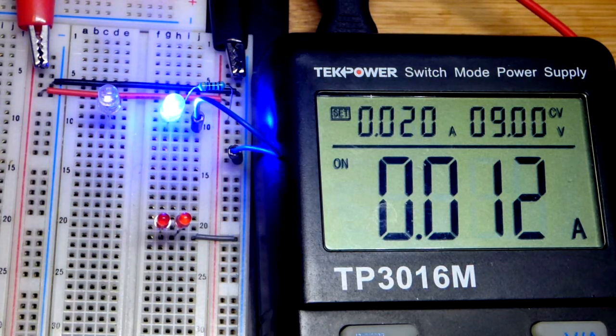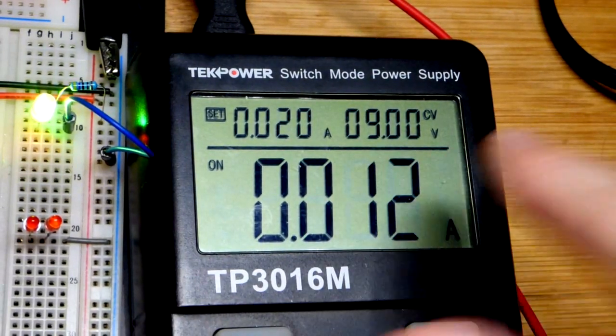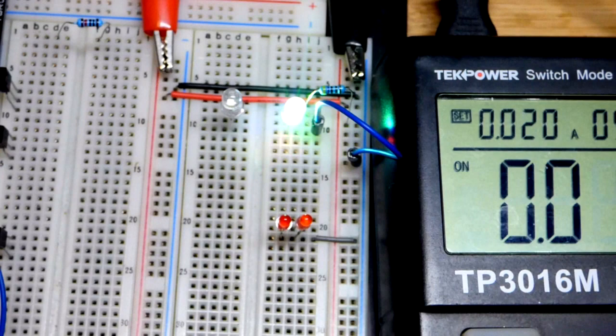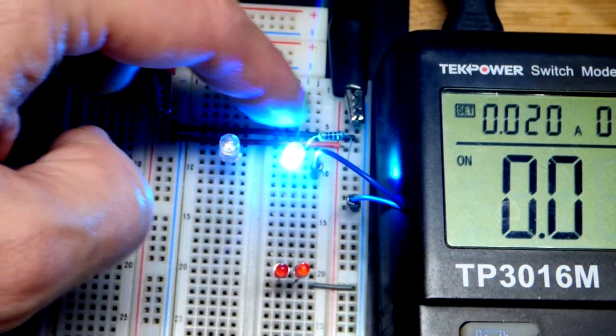You can also see the current. We have a 9-volt power supply right there, and the slow flashing LED just keeps changing color. It looks better in person, but they are clear so they don't look great.